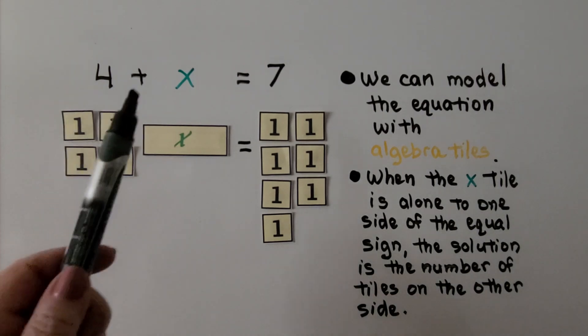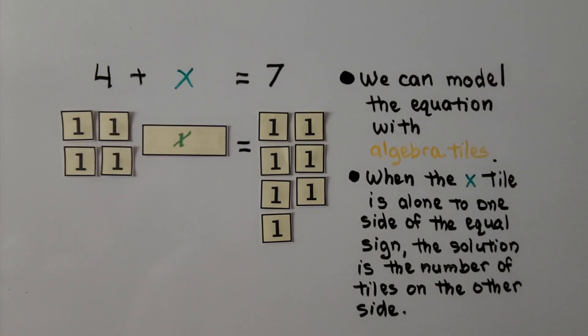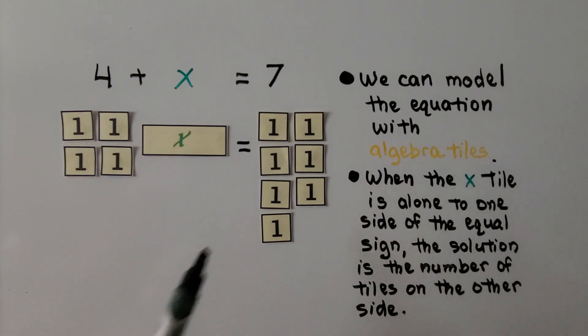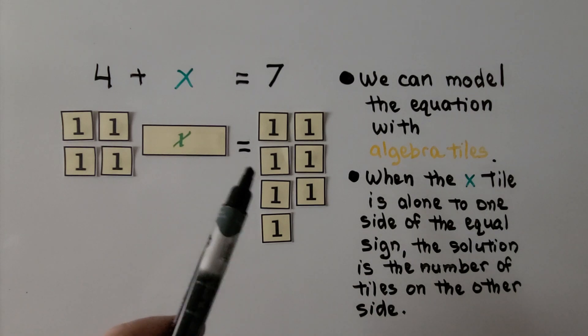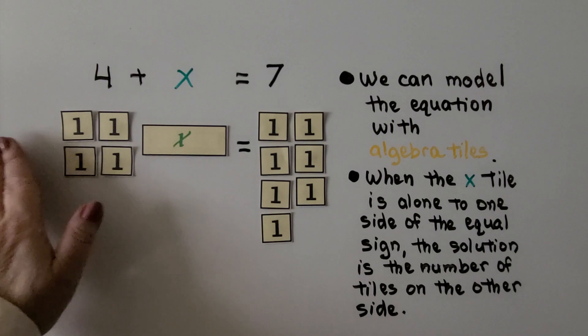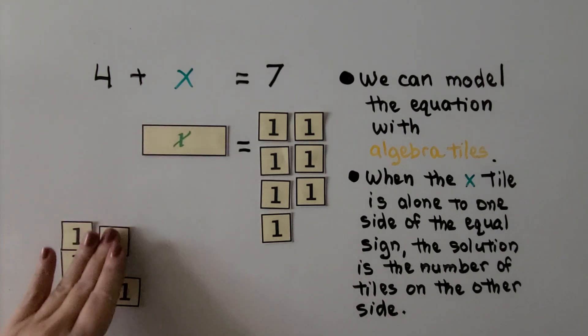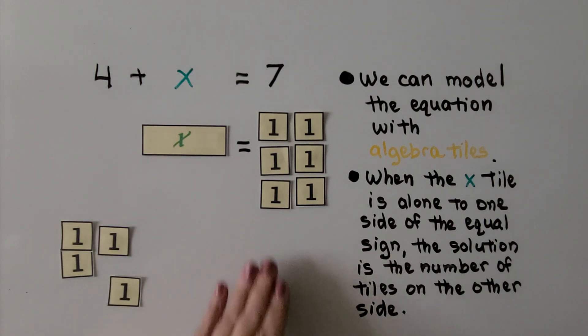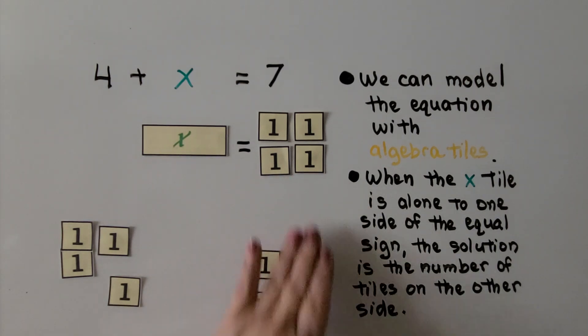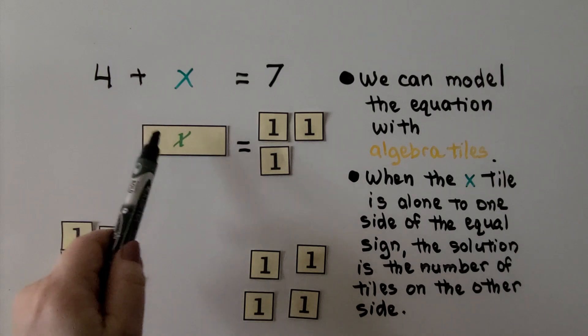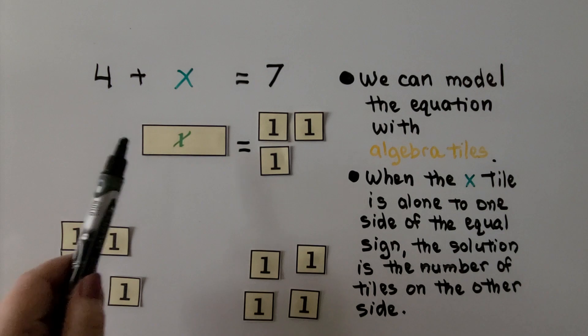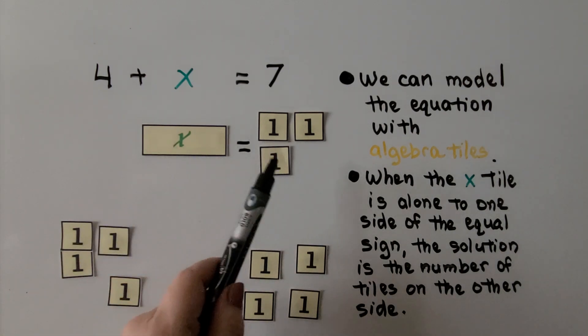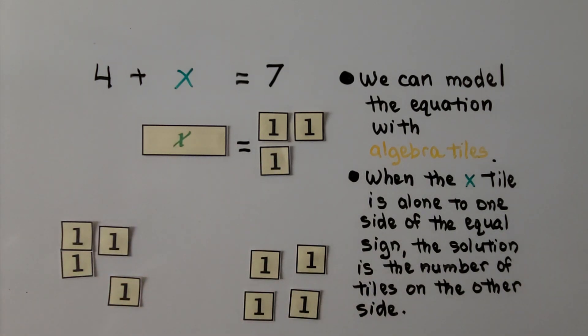Here we have 4 plus x is equal to 7. We can model the equation with algebra tiles. We have 4 plus some amount x is equal to 7. We can take 4 away from this side. 1, 2, 3, 4. We can take 4 away from this side. 1, 2, 3, 4. Now we have an x on this side and 3 on this side. When the x tile is alone to one side of the equal sign, the solution is the number of tiles on the other side.